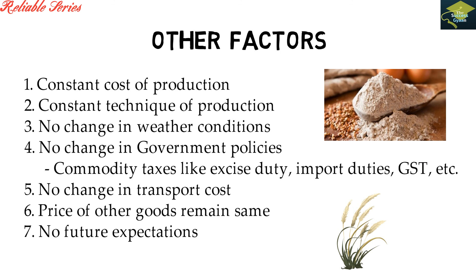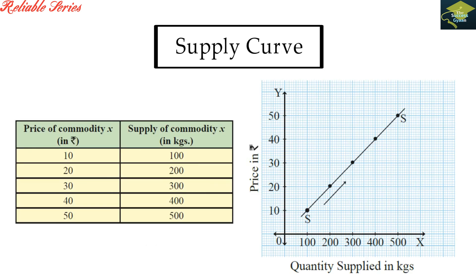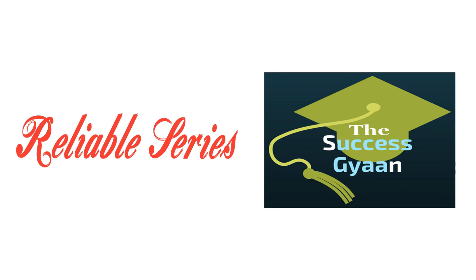चलिए इस topic को summarize करते हैं. इस वीडियो में हमने समझा law of supply — जो बताता है कि other factors being constant, price और supplied quantity directly proportional होती है. इसी direct relationship को हमने supply schedule और supply curve की मदद से भी समझा. इस वीडियो के content का reference reliable publications की book से लिया है — book का link description में मिलेगा. I hope आपको यह video useful और knowledgeable लगा होगा. ऐसे और interesting videos देखने के लिए हमारे channel को subscribe करें.